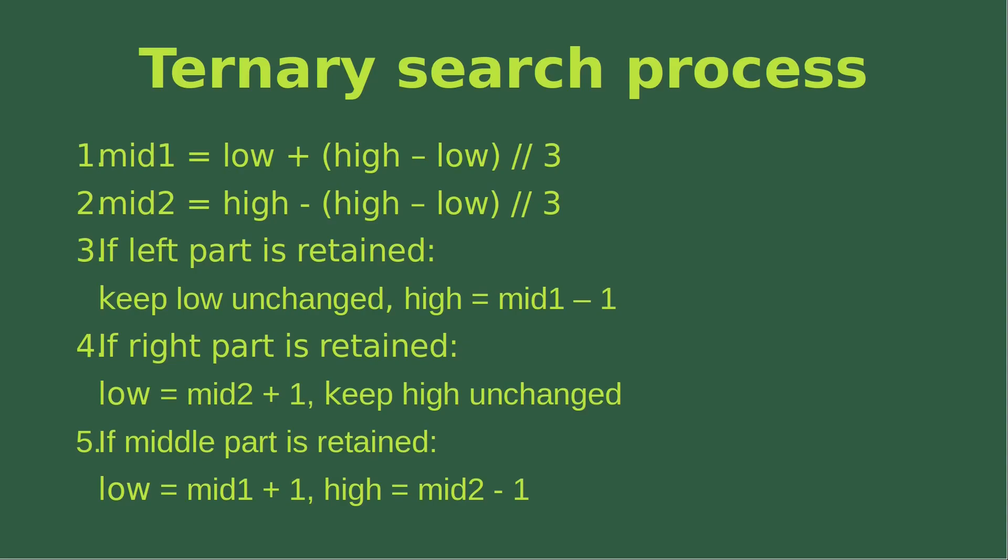Similarly, mid two is found by the formula on bullet point two. Third, if the left part is to be retained, we just keep the low index unchanged, and the high index is equal to mid one minus one. If the right-hand part is retained, we change the low index to mid two plus one, and we keep the high index unchanged.